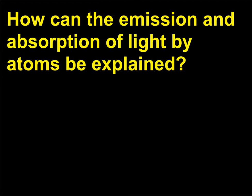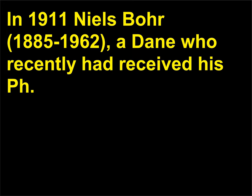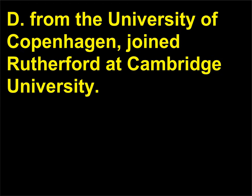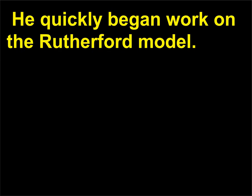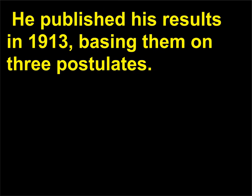How can the emission and absorption of light by atoms be explained? In 1911 Niels Bohr (1885–1962), a Dane who had recently received his PhD from the University of Copenhagen, joined Rutherford at Cambridge University. He quickly began work on the Rutherford model and published his results in 1913, basing them on three postulates.